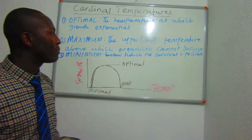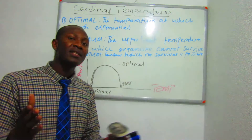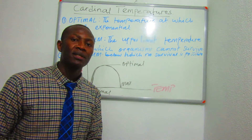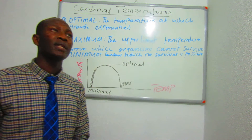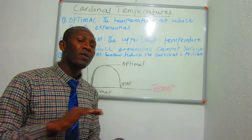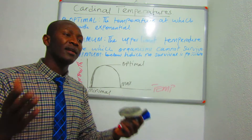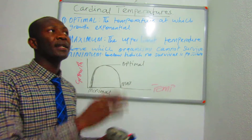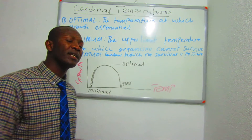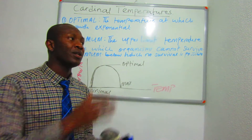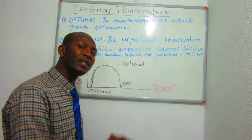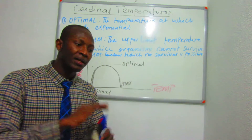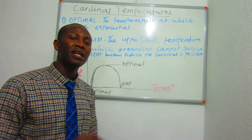The minimum temperature is the temperature below which life is not possible. For example, if an organism's lowest survivable temperature is 2 degrees Celsius, and you take that organism to 0 degrees Celsius — below its temperature requirement for growth — life is going to be in danger.